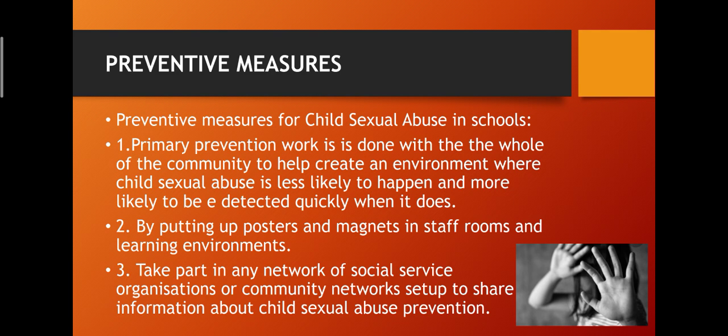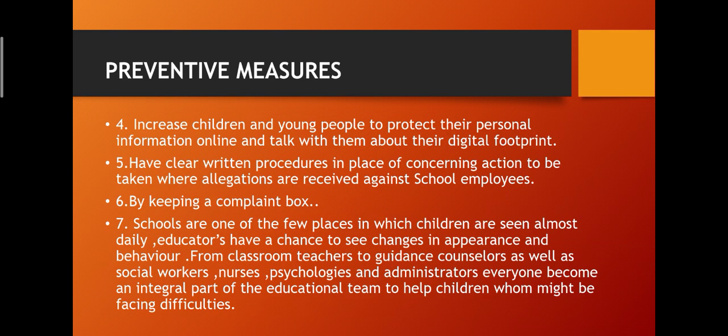Preventive measures for child sexual abuse in schools: primary prevention work is done with the whole community to help create an environment where child sexual abuse is less likely to happen and more likely to be detected quickly when it does. By putting up posters and magnets in staff rooms and learning environments. Take part in any network of social service organizations or community networks set up to share information about child sexual abuse prevention. Encourage children and young people to protect their personal information online and talk with them about their digital footprint.